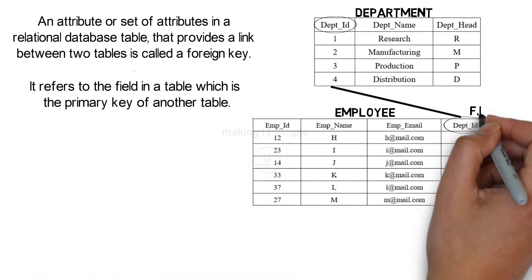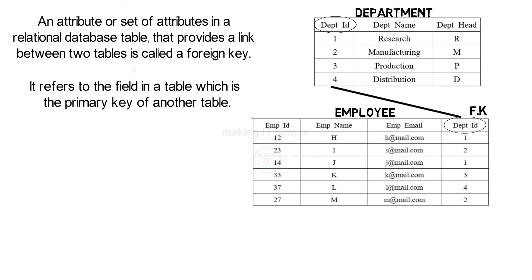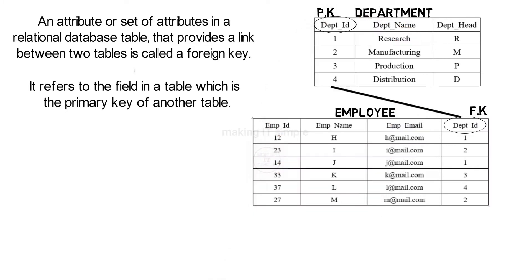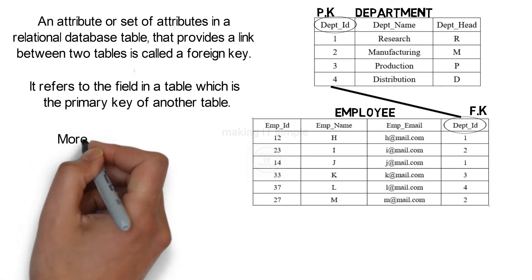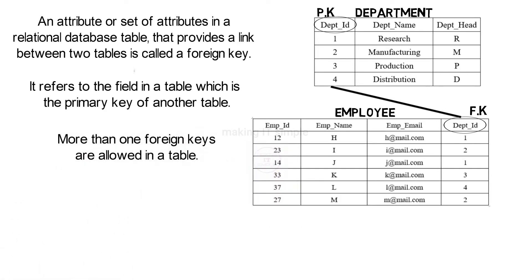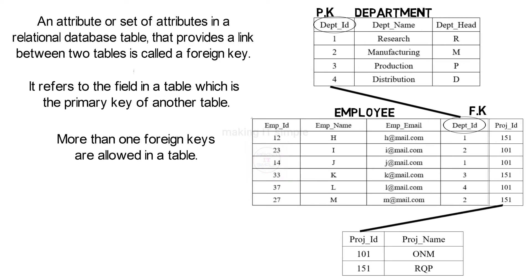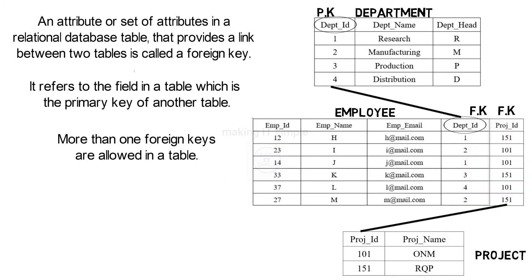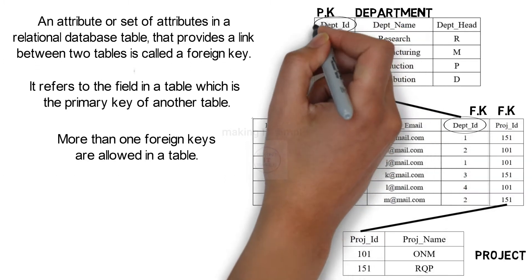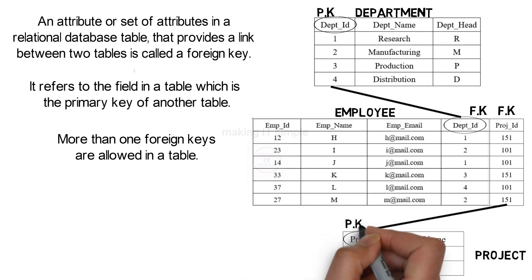It refers to the field in a table which is the primary key of another table. In our example, department ID, which is the foreign key in the employee table, is referring to department ID which is the primary key in the department table. More than one foreign keys are allowed in a table. For example, there can be another project table, and project ID will be referenced in the employee table to specify the relation between employees and projects. So now the employee table has two foreign keys — one referring to the primary key of the department table and another to the primary key of the project table.